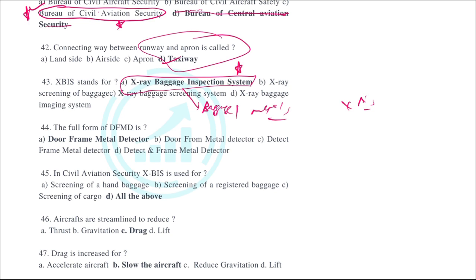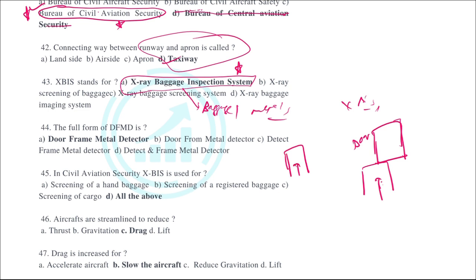DFMD stands for Door Frame Metal Detector. As described in the security chapter, the DFMD is shaped like a door frame through which a person walks. It is in the shape of a door with a frame, and it detects the presence of metals — hence called a Door Frame Metal Detector.